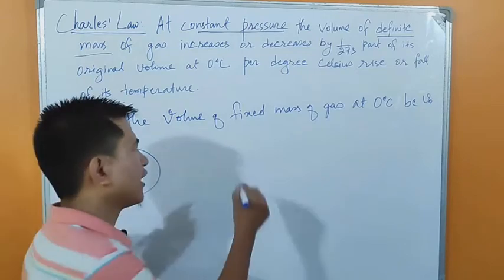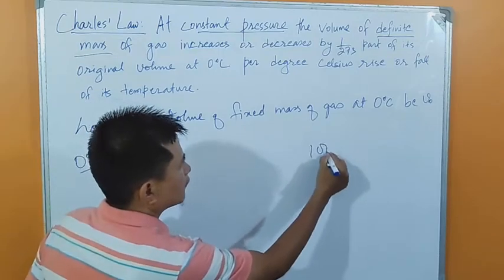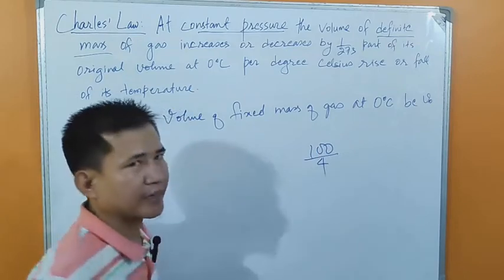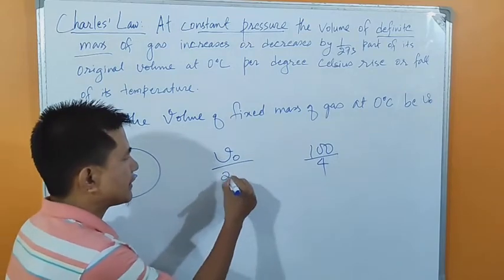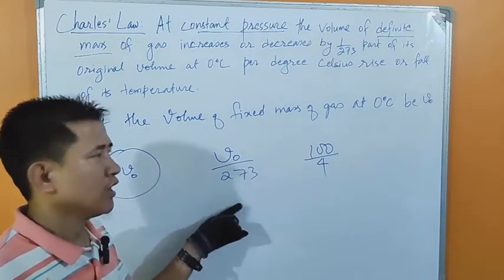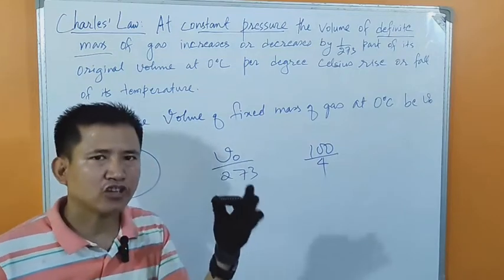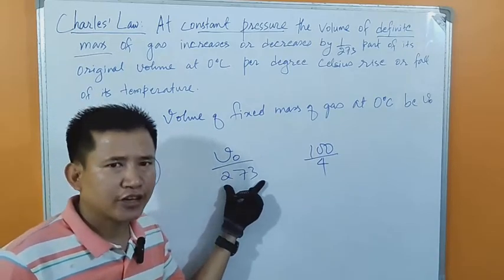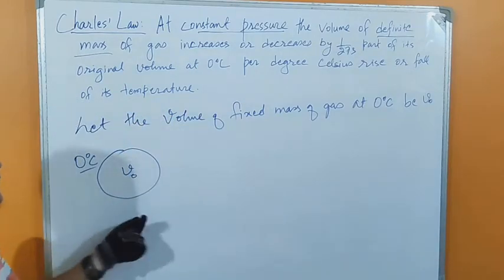Into however many parts you are dividing, that many numbers should be in the denominator — just like dividing 100 into 4 parts gives 100/4 = 25. Similarly, if I divide V naught into 273 parts, the value of each part will be V naught upon 273.